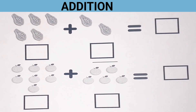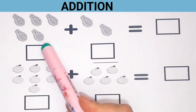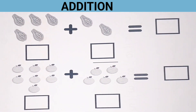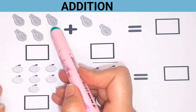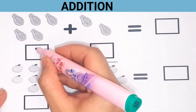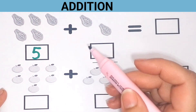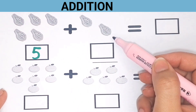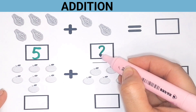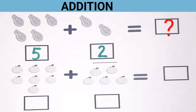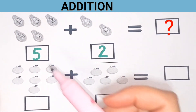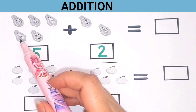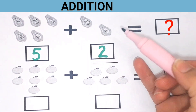Now we learn addition — two digit addition. Here are some pairs, let's count them: 1, 2, 3, 4, 5. Here are five pairs, we write five. And 1, 2 — here are two pairs. Now we will find the total number of pairs, so we will count all of them: 1, 2, 3, 4, 5, 6, 7.